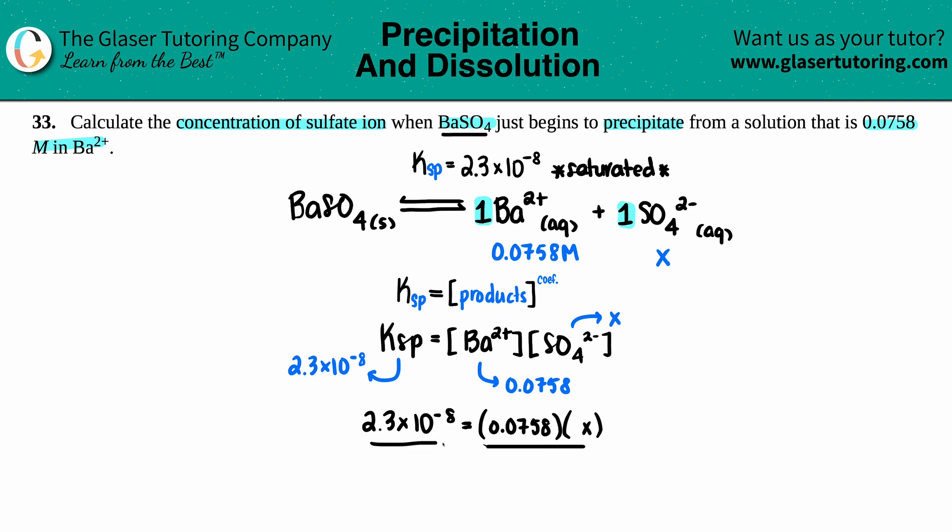2.3 times 10 to the negative 8th divided by 0.0758 gives me 3.03 times 10 to the negative 7th, and that's molarity.